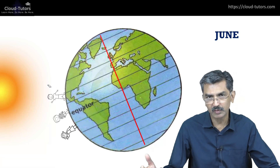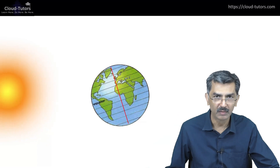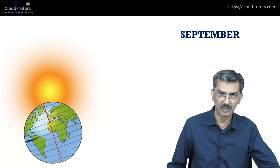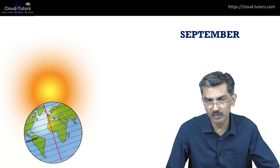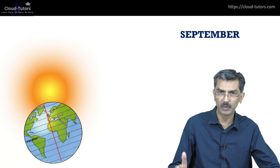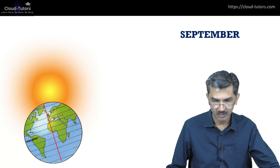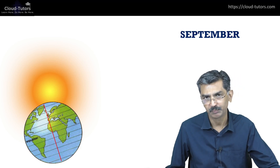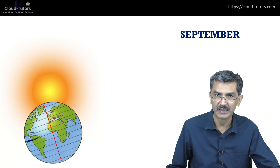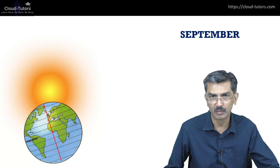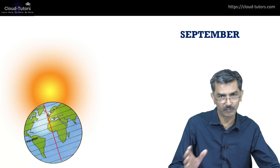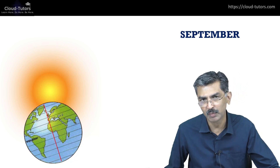The Earth continues its journey around the Sun, and in the month of September it has completed one quarter of its orbit. In this situation the Sun is directly overhead the equator at 12 p.m. — that would be the equinox, equal days and nights. So the Sun would be directly overhead our friend C in September.